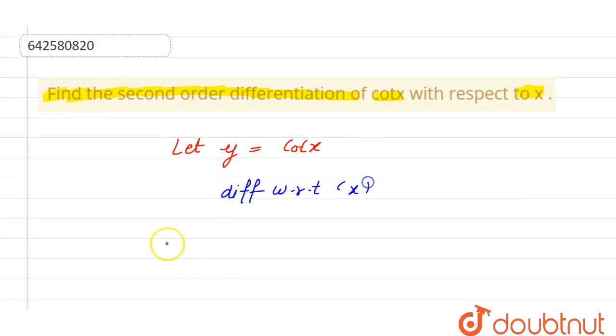By differentiating with respect to x, we will get dy/dx equal to minus cosec²x. Now,